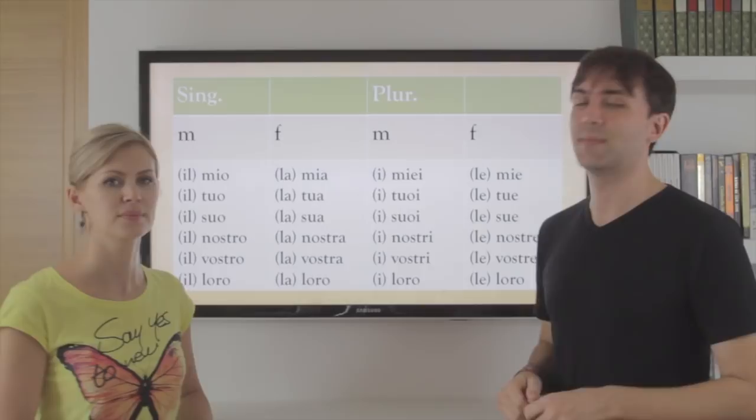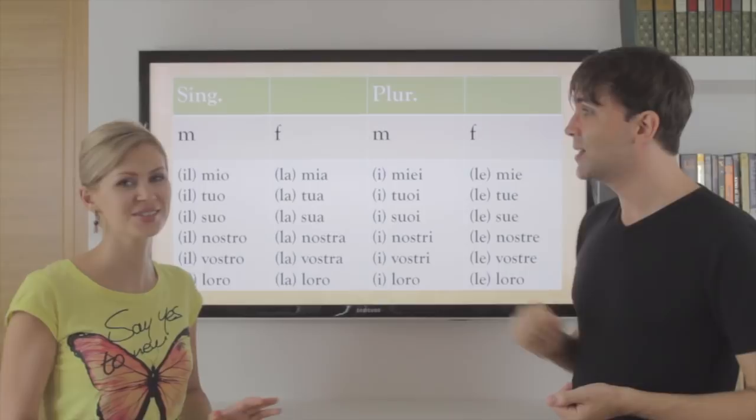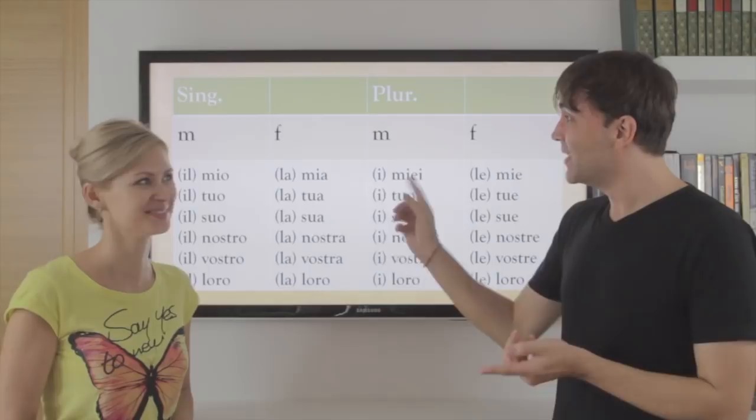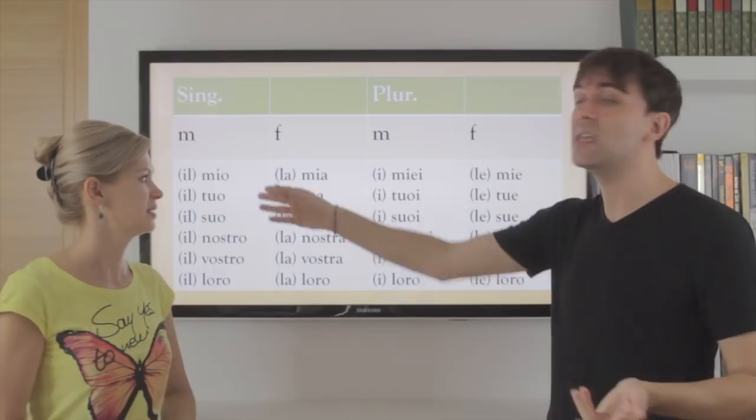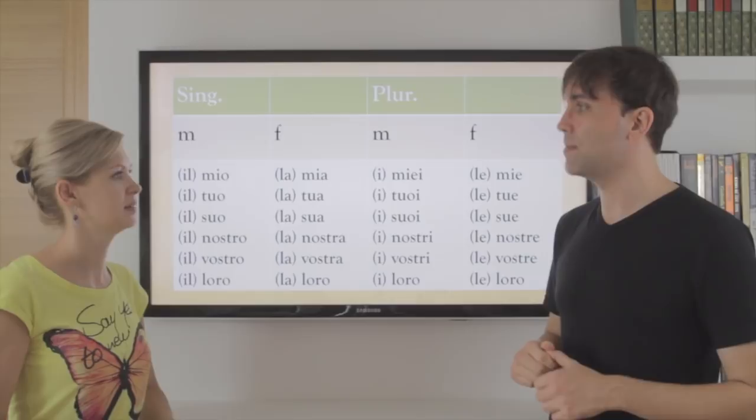Le loro gioie — gioia means joy. So now you just have to learn these forms. You're lucky because there's no distinction like 'my' vs 'mine' — it's always mio. For example: questa TV è la mia.